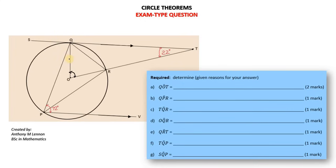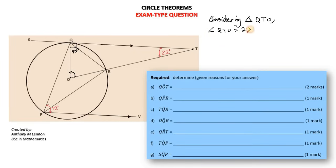By theorem, a tangent meets a radius at 90 degrees. So this angle here is 90 degrees. We can say, considering triangle QTO, angle QTO equals 22 degrees. Angle OQT equals 90 degrees — reason: radius meets tangent at 90 degrees.